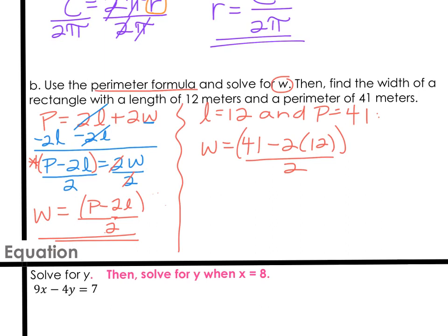Hopefully you got either 17 halves meters or 8.5 meters. With that order of operations, we multiply the 2 and the 12, but then we have to subtract the numerator before we divide by 2. If you don't do that, you definitely end up with a different result. So be careful with those parentheses. I would take your answer in either fraction form or simplified decimal form.